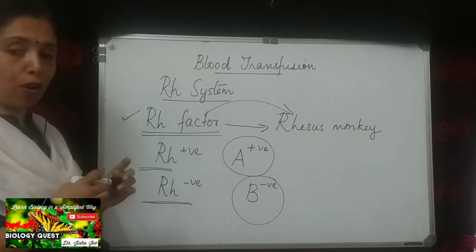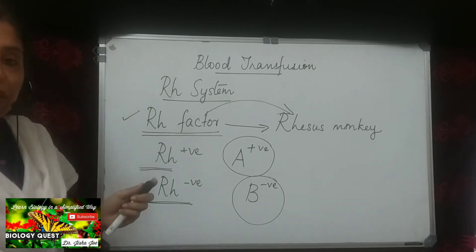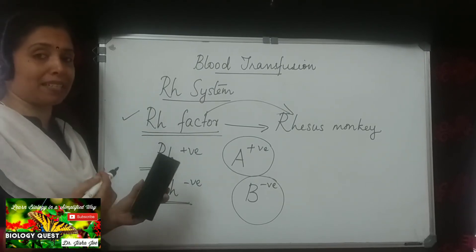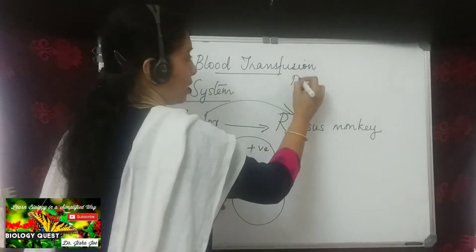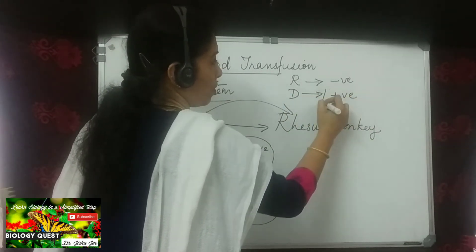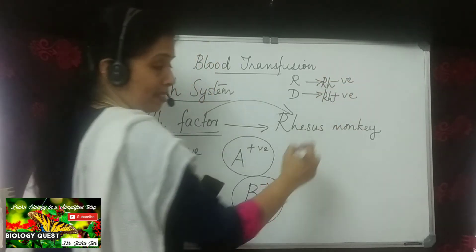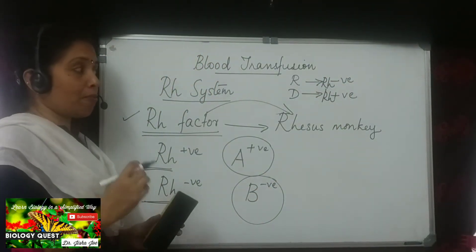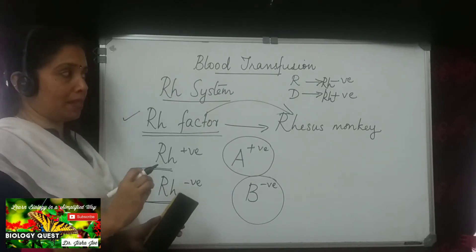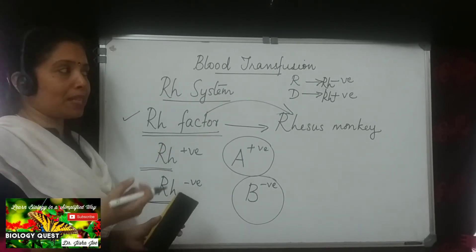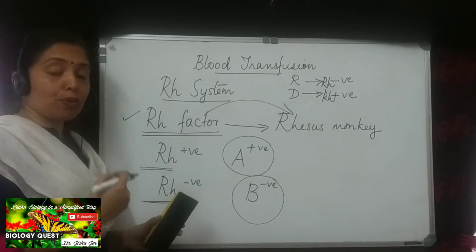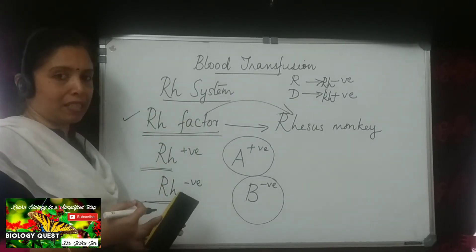A problem arises during blood transfusion when the donor is RH positive and the recipient is RH negative. When the RH negative recipient receives blood from an RH positive donor, the RH factor will induce the development of antibodies inside the RH negative person.